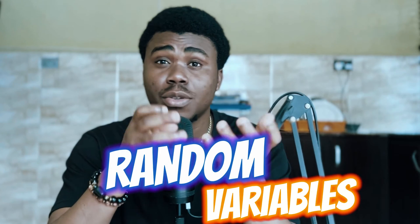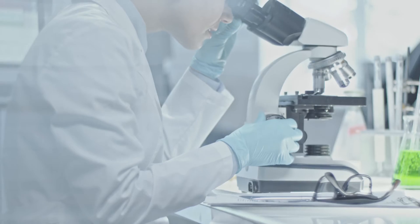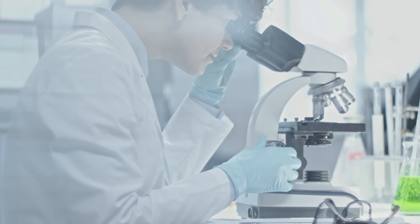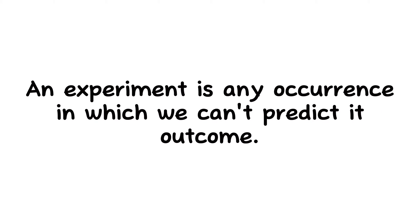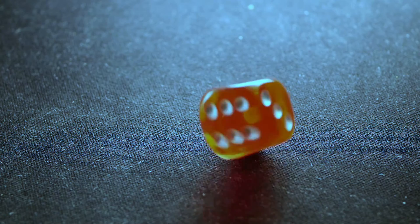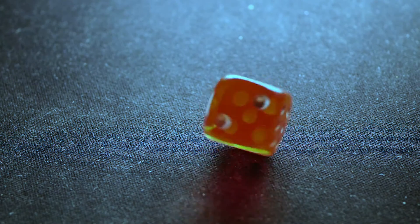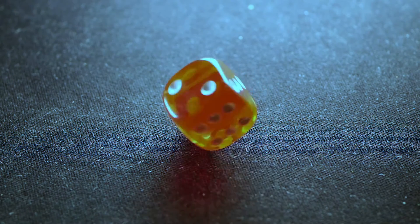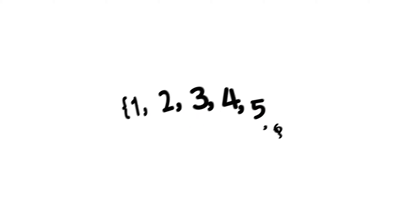The first step in understanding probability distribution is to understand a random variable, and to understand a random variable we have to understand what an experiment is. Basically, an experiment is any occurrence whose outcome you can't predict. A random variable is the result of a random experiment — take the experiment of rolling a fair die once.